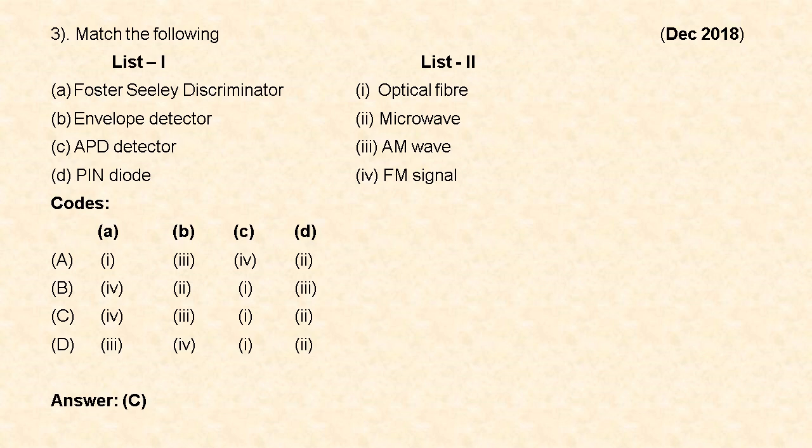Next question from December 2018, match-the-following type: Foster-Sealy discriminator is used in FM signals; envelope detector is used in AM waves; avalanche photodiode detector is used in optical fiber communication; PIN diode is used in microwave applications. Hence option C is the correct answer.